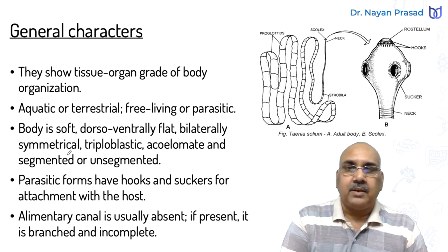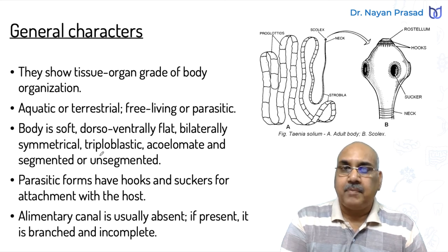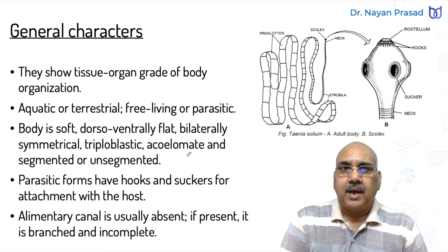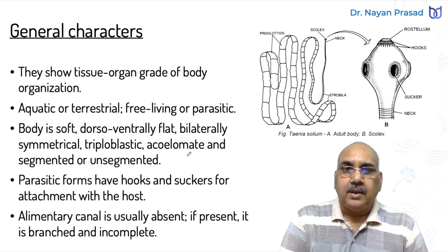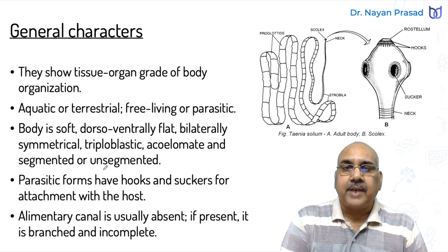They are bilaterally symmetrical — right and left sides are similar. Triploblastic, having three germinal layers: ectoderm, mesoderm, and endoderm. The ectoderm is the outer layer, endoderm the inner layer, and mesoderm the middle layer. They are acoelomate, having no true coelom — body cavity like coelom is absent. The body may be segmented or unsegmented, as seen in the diagrams: tapeworm has a segmented body, while liver fluke has an unsegmented body.